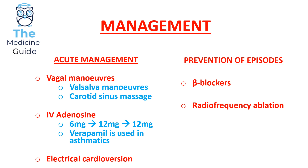Adenosine is contraindicated in asthmatic patients — that's why verapamil is used instead. This is a very important piece of information to remember for your knowledge exam: IV adenosine is contraindicated in asthmatics, so in asthmatic patients we would use verapamil.